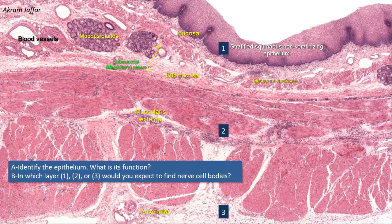Note that the muscularis mucosa here is not that well formed — this is a characteristic feature of the esophagus, where it is interrupted. In other parts of the gut where it is well formed, it produces local movements and folding of the mucosa.